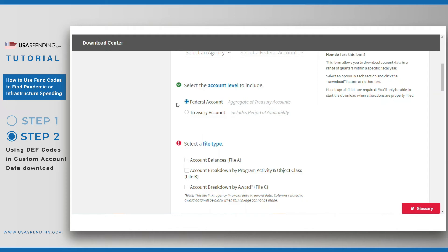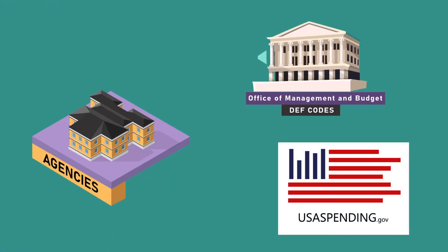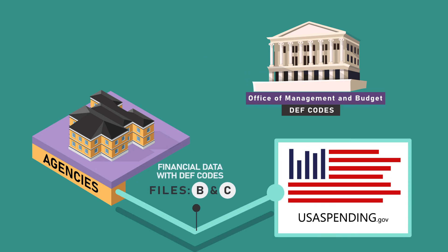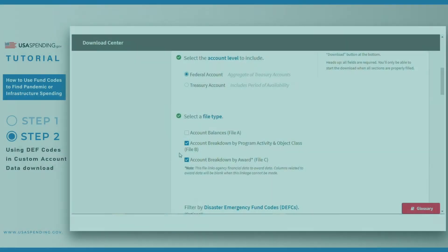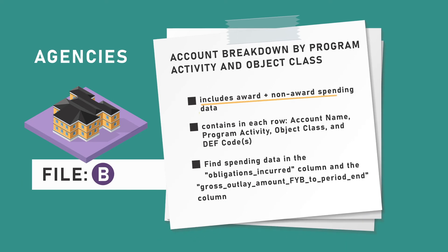You also have the option to select different file types. The three types correspond to files A, B, and C that agencies submit on a monthly basis. However, it is important to note that only the second and third types — files B and C — have DEF code data. The second file type, Account Breakdown by Program Activity and Object Class, or file B, features account spending data, which includes both award and non-award spending. If you download this file type, you can search for the obligations incurred column to see how much has been spent from COVID funding for every unique combination of federal account, program activity, and object class. You can also search for the gross outlay amount FYB to period end column to see how much has been outlaid from COVID funding.